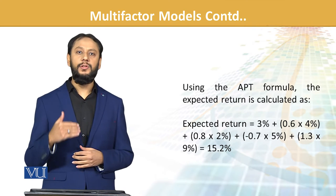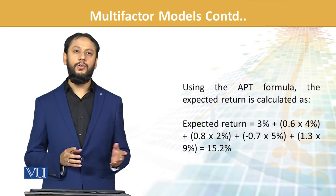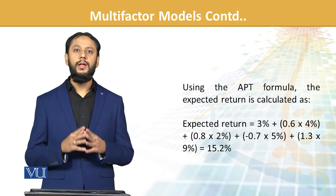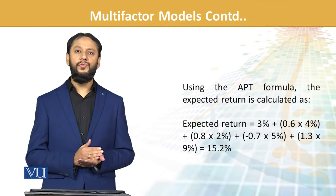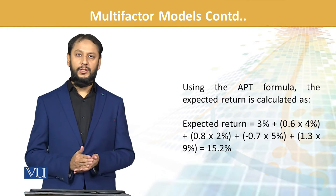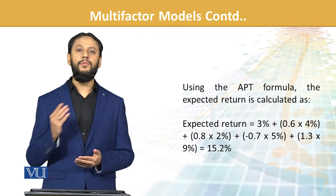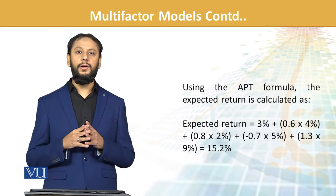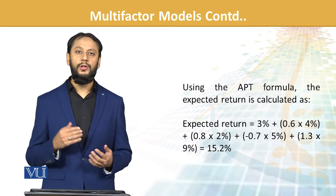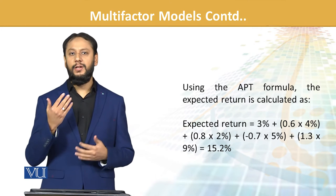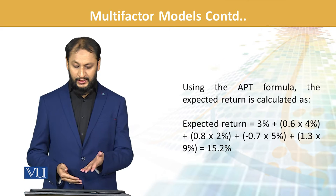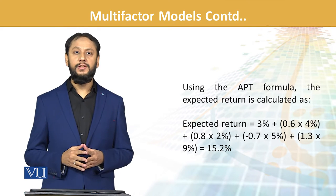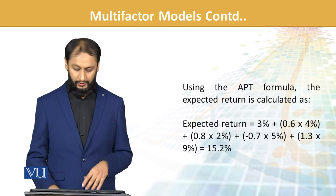Aaj hum iski application ko dekhna hai. You can even recall the previous module slide — usme formula ko dekh ke you can apply it again. Simple formula hai: risk-free rate mein aapne sensitivity ko multiply karna hai uske expected returns se, aur jitne factors honge unke returns ko sum up karna hai, to you'll get the expected return from that stock. Kisi factor se sensitivity zyada hogi, kisi se kum — humare paas 0.8 bhi hai aur negative bhi hai. All types of sensitivities can be there.